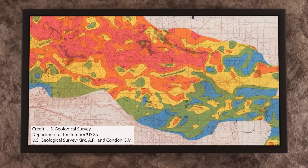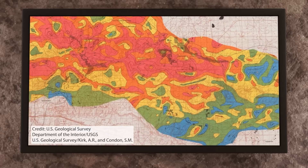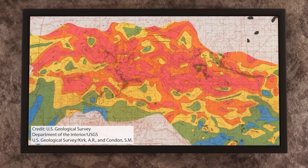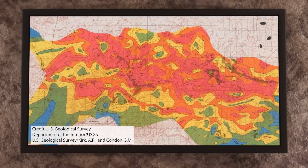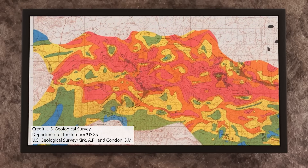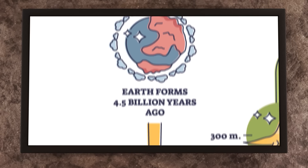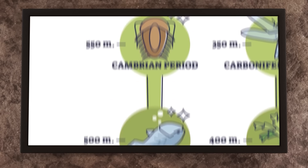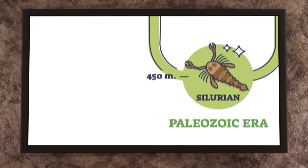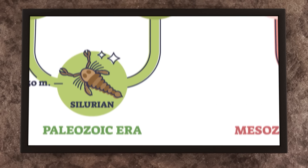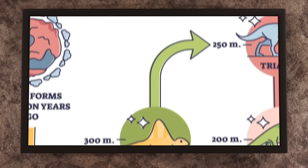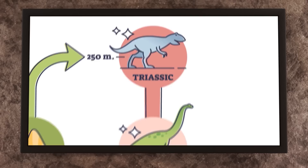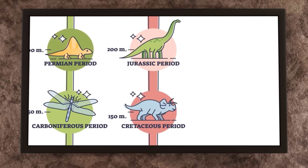Triassic was the earliest, the Jurassic was the middle, and the Cretaceous was at the end of the dinosaur era. For this series, we are mainly focused on the Jurassic period, somewhere between 155 million to 145 million years ago, because of the prolific dinosaur bone beds from that period.